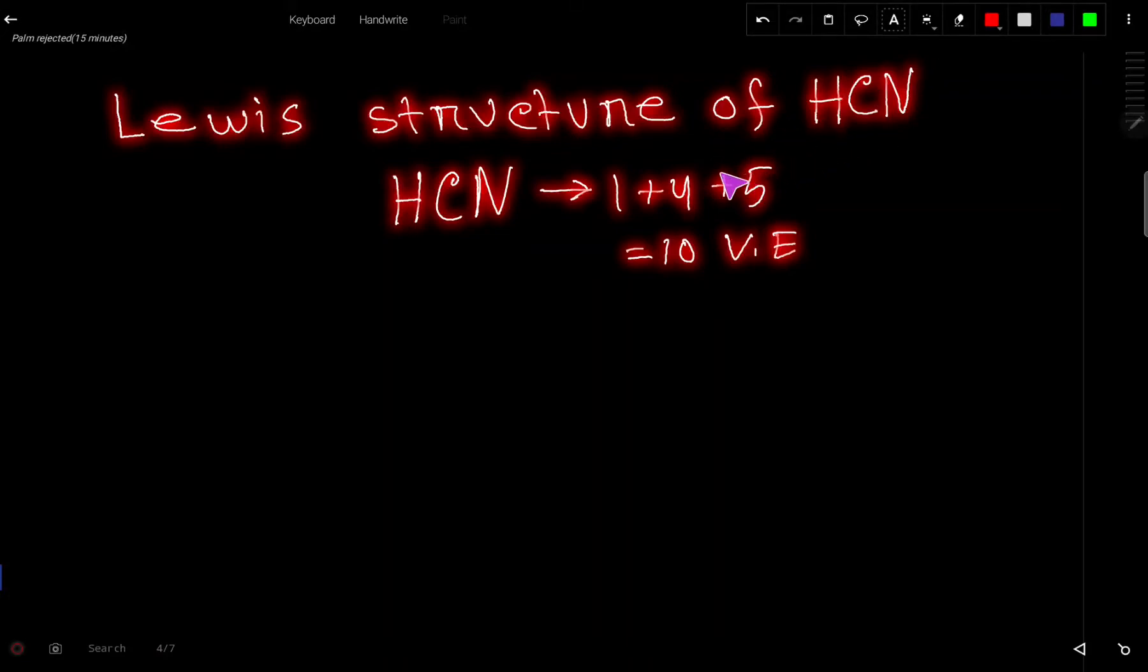Lewis structure of HCN. At first we have to find out the valence electrons for HCN. HCN has 10 valence electrons.